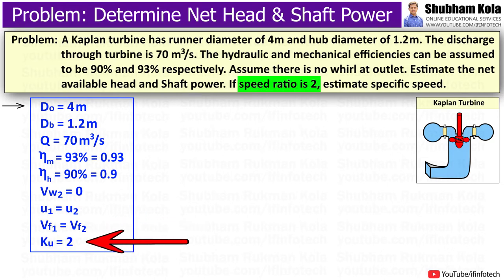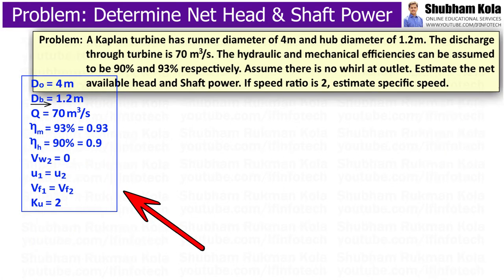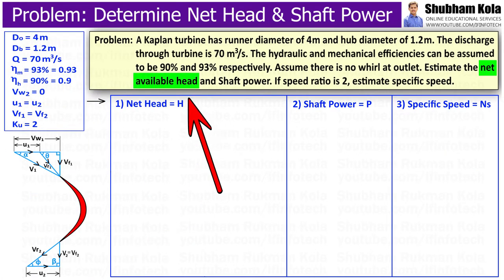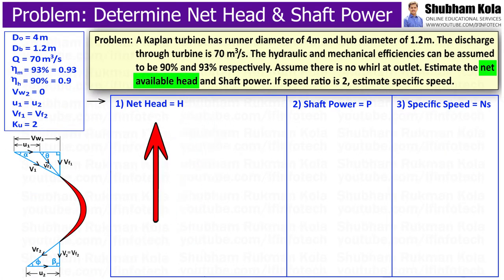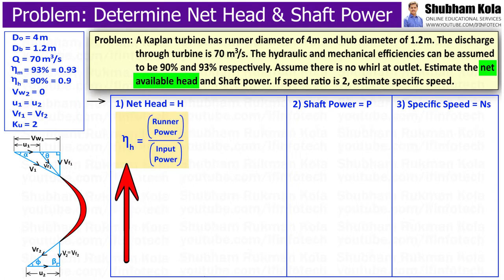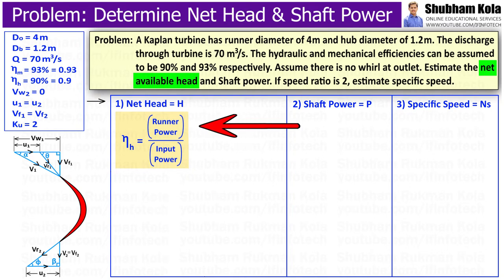The speed ratio K_U equals 2. First, we want to calculate the net head H. To calculate net head, I will use the hydraulic efficiency formula, where hydraulic efficiency is the ratio of runner power to input power.